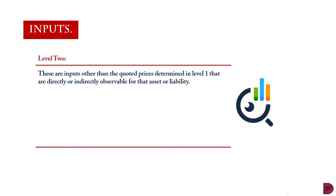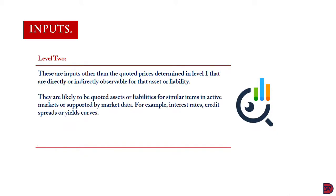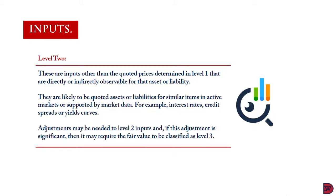Level two: these are inputs other than the quoted prices determined in level one — ones that do not require adjustment — that are directly or indirectly observable for the asset or liability. They are likely to be quoted for similar items in an active market or supported by market data. Examples include interest rates, credit spreads, or yield curves. Adjustments may be needed for inputs in level two, and if these adjustments are significant, it may require the fair value to be classified as level three.